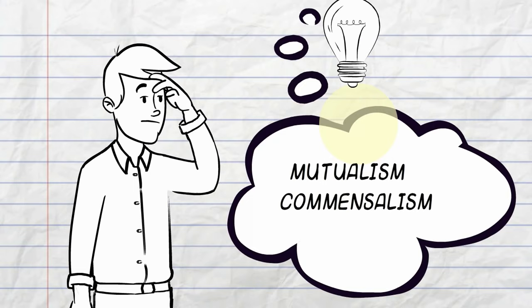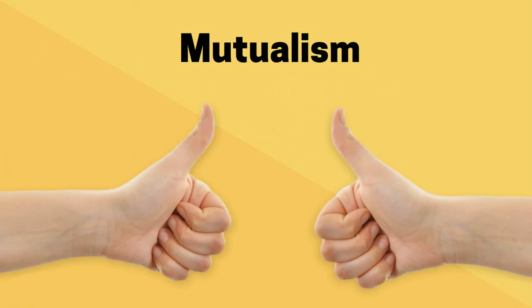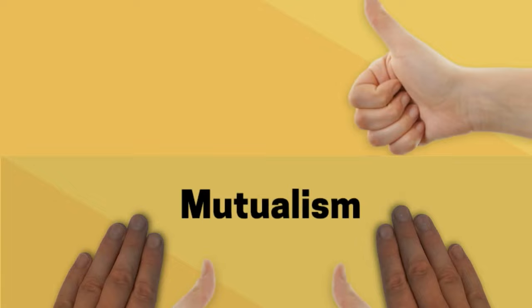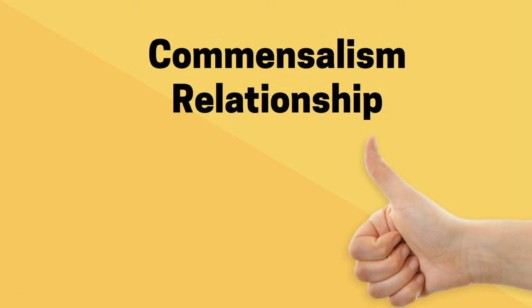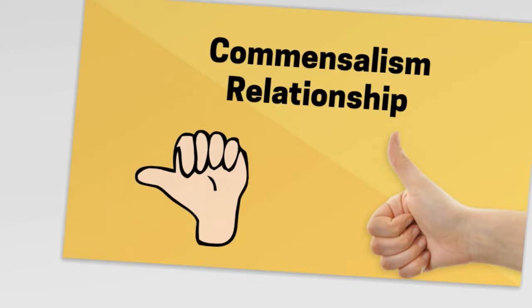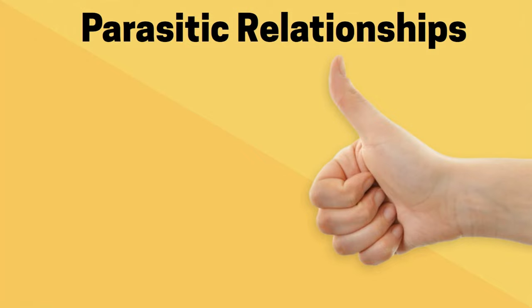With Mutualism, both organisms benefit from the relationship — so it's a thumbs up for both. With Commensalism, one organism benefits and the other organism is neither helped nor harmed — kind of like neutral. In Parasitic Relationships, one organism benefits while the other organism is harmed.